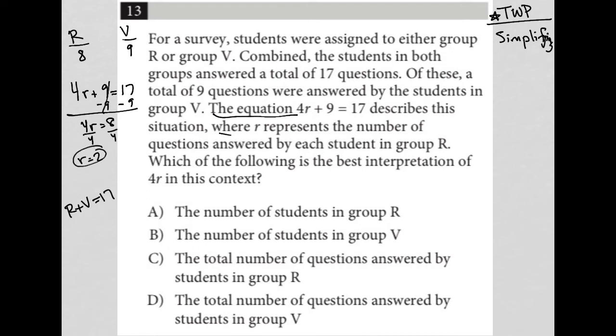And that tells me again, right, because R represents the number of questions answered by each student in group R. So, each student answered two questions, which tells us that there are four students in group R. All right, so R equals four students.